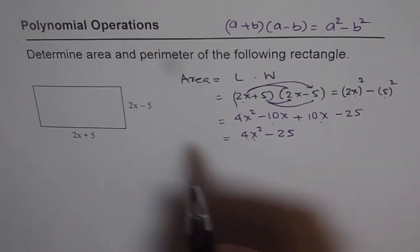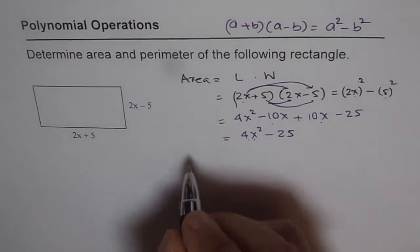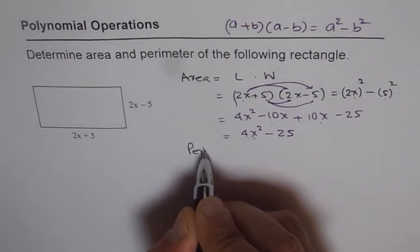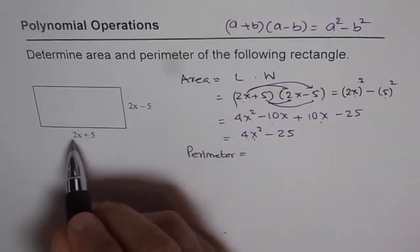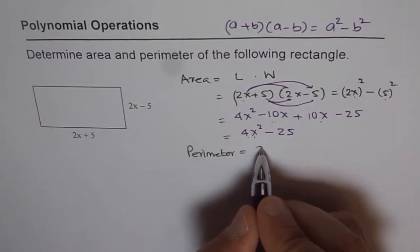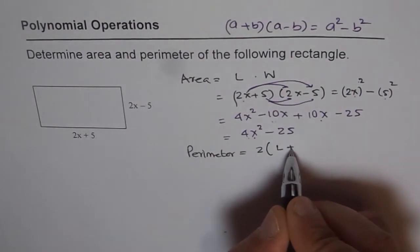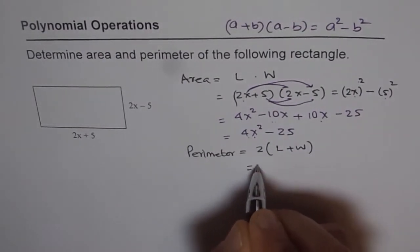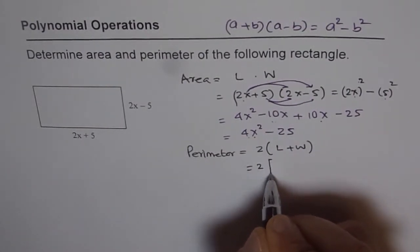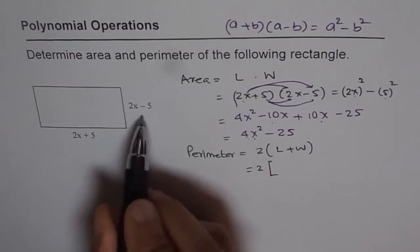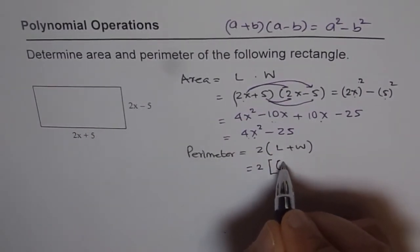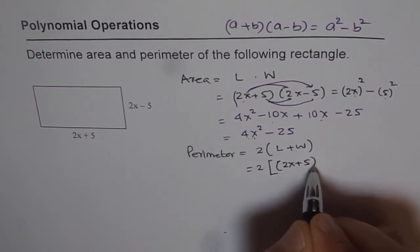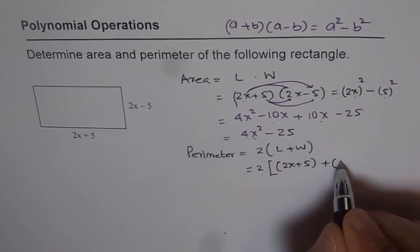Now let's find out the perimeter of this rectangle. Now what is perimeter? Perimeter is sum of sides, all the sides. So we know length and width. We can say 2 times length plus width, right? So which is 2 times, we'll use different brackets here since they are expressions, 2x plus 5 is the length plus width is 2x minus 5.